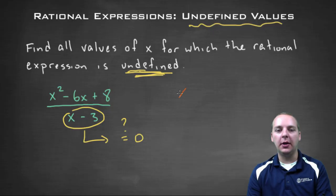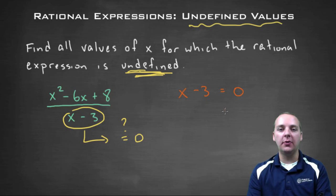You're just going to take the denominator, we'll take x minus three, we'll set it equal to zero and then we'll solve it. So in this case x would equal three.